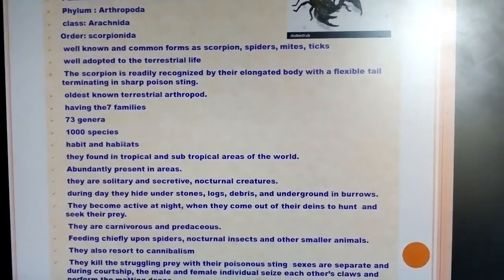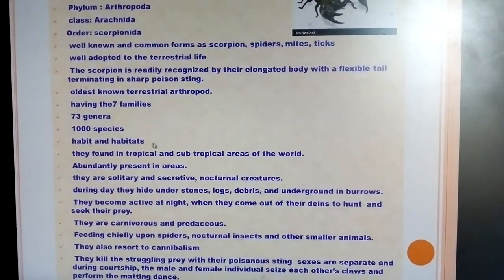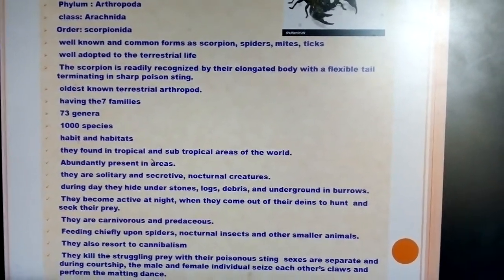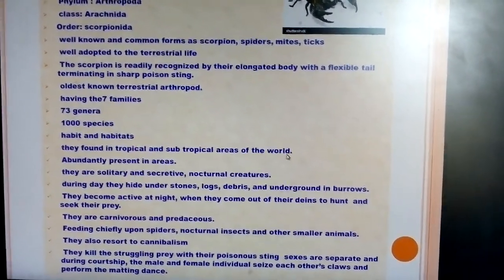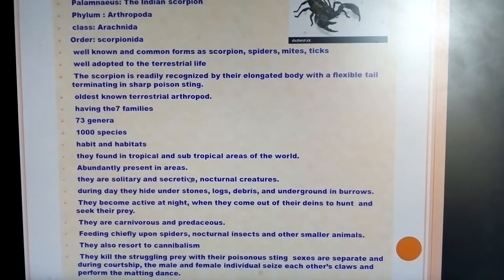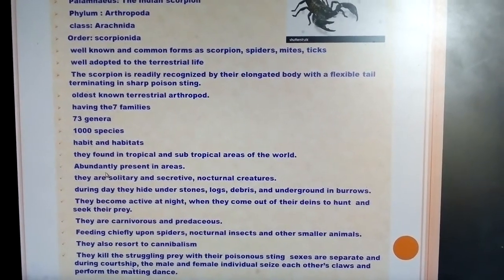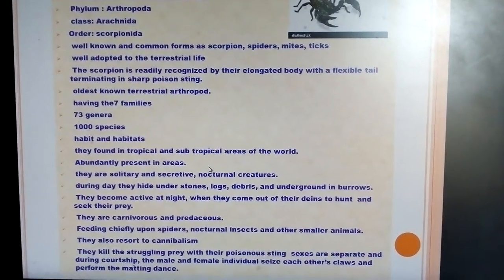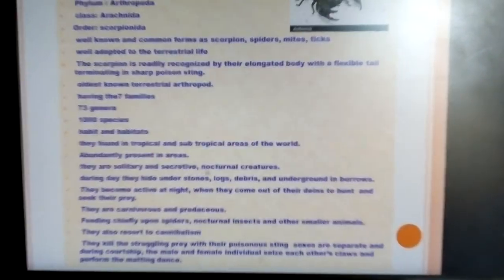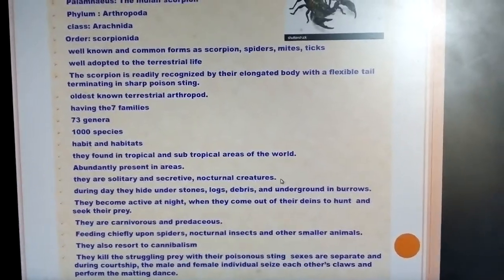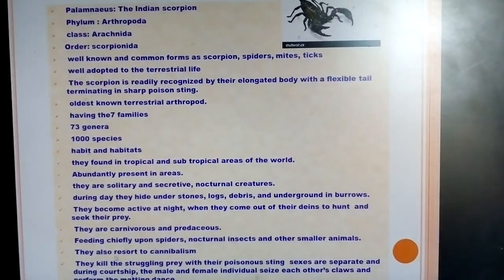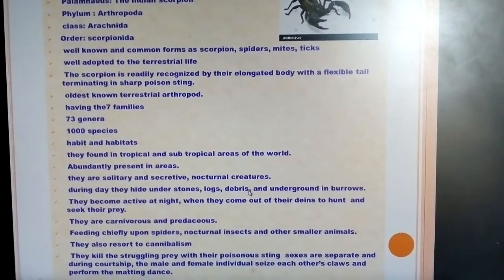In the world, around 1000 species are present. Their habit and habitat are tropical and subtropical areas where they are found abundantly. They are solitary, secretive, and nocturnal creatures.